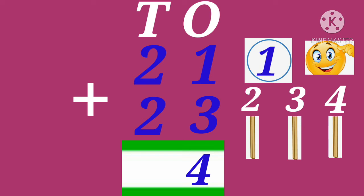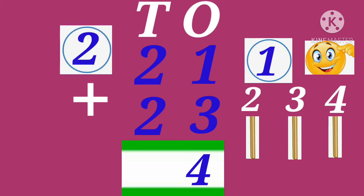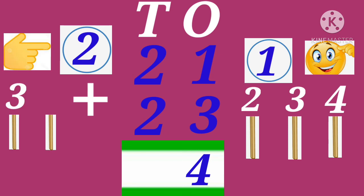And the other side number is 2, circle the number 2 like this. Downside number is 2, draw 2 bars like this. 1, 2. Count all together: 2, 3, 4. Total sum 4.